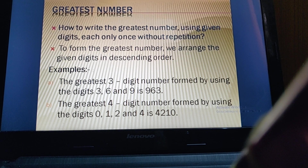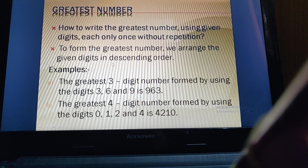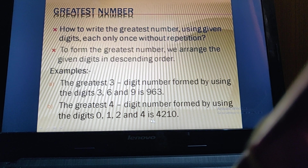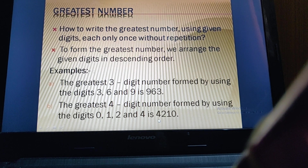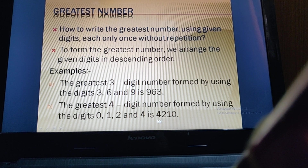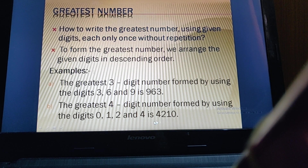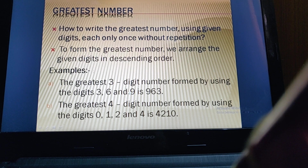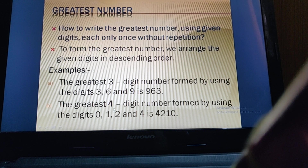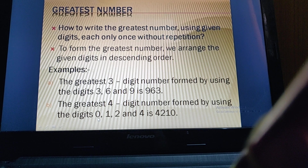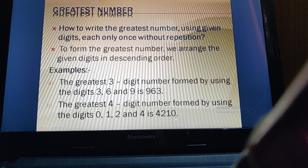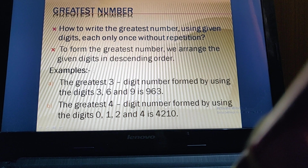We always place zero at the end because we simply arrange the digits in descending order. So first comes 4, then 2, then 1, and zero comes last. Whenever we are forming the greatest number and zero is present, zero will always come at the end, following the descending order. The greatest four-digit number is 4210.